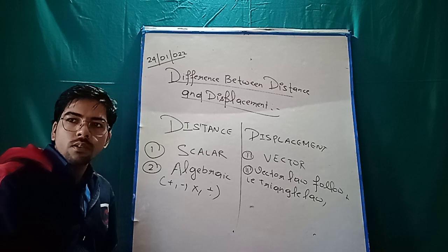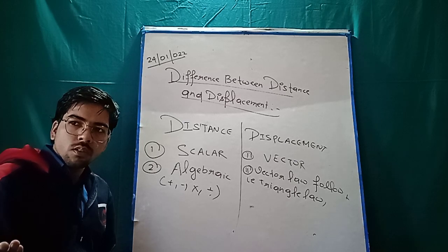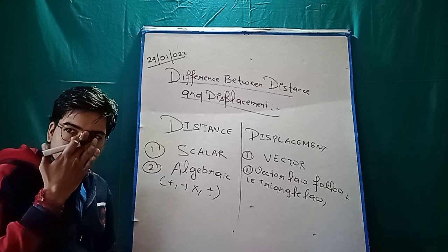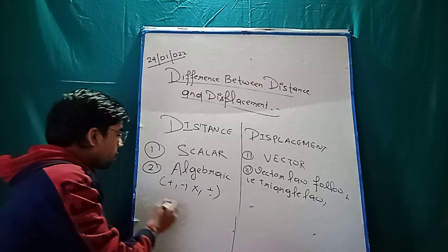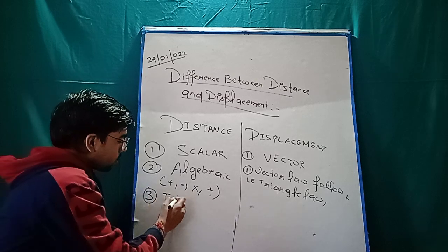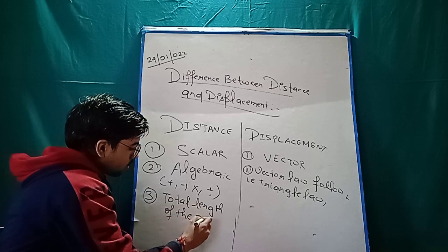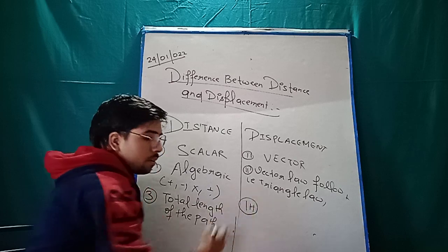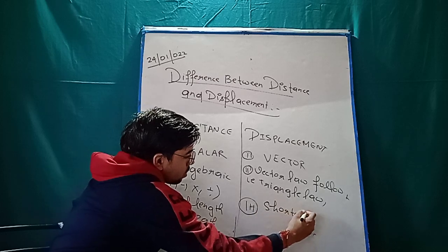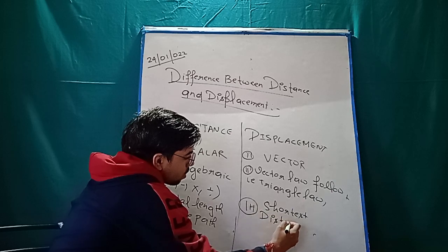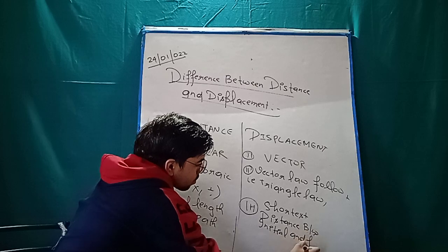If someone goes from O to A, then A to P — we add the distances. But if a particle goes from O and comes back to O, displacement is 0. So distance is the total length of the path, and if you ask me what displacement is — it is the shortest distance between the initial and final position.